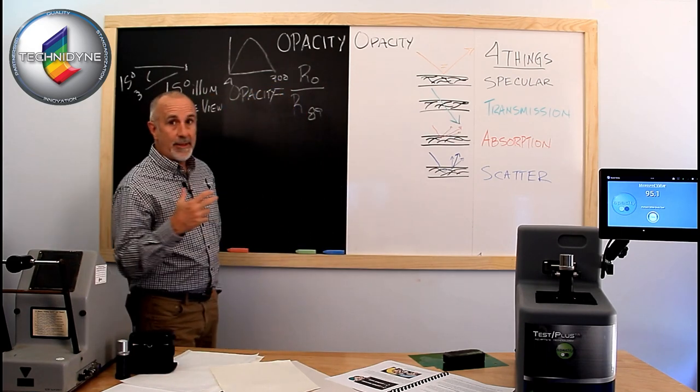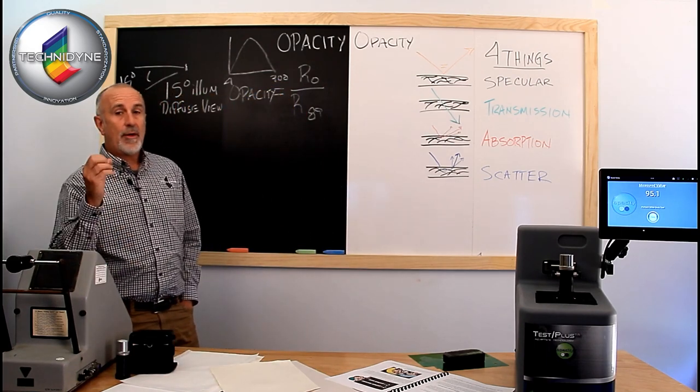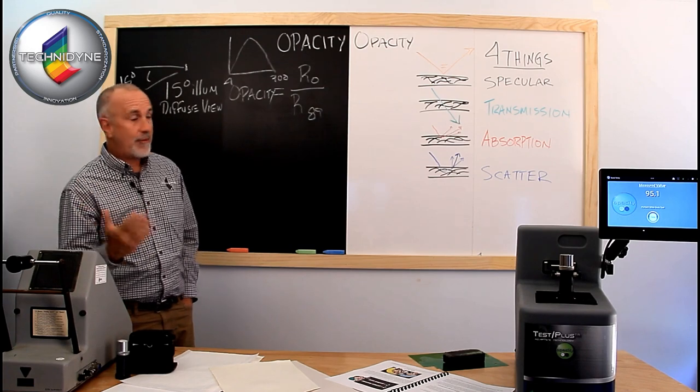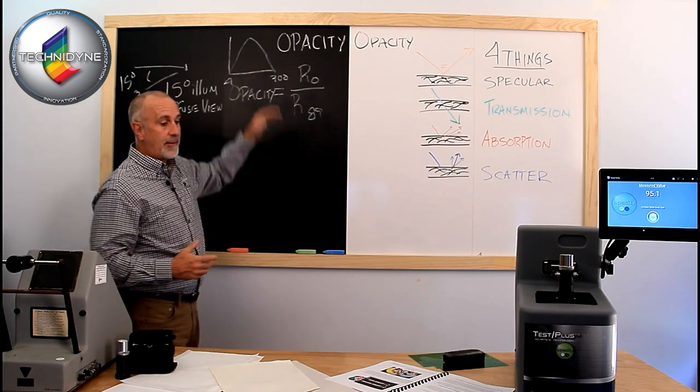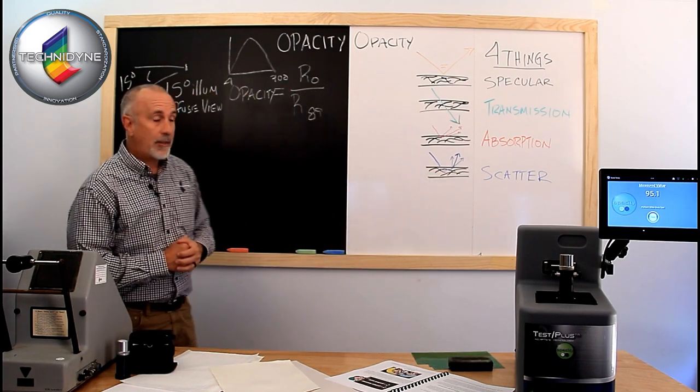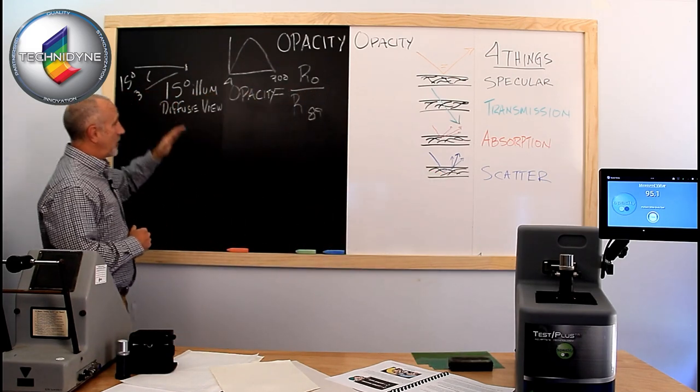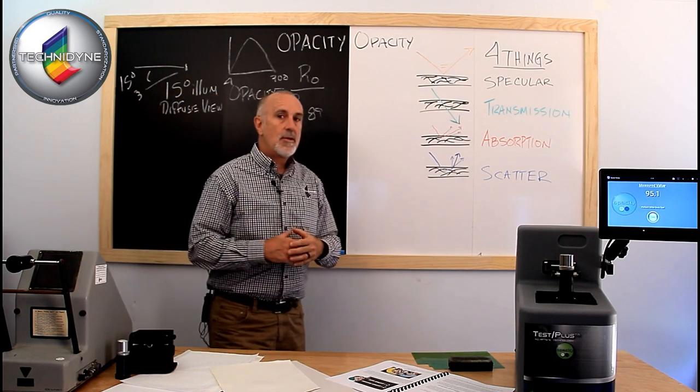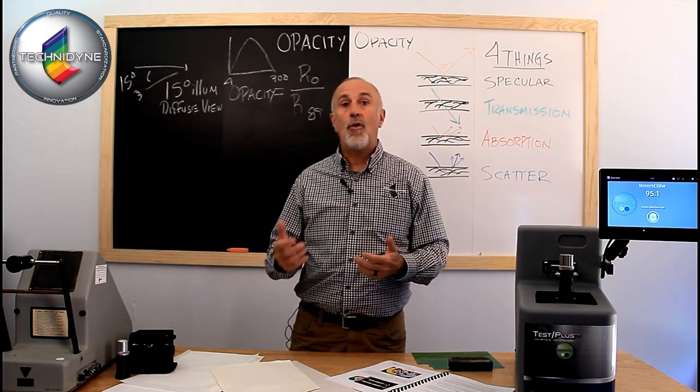So you've got that backing. We're looking at the illuminant A, the Y function, which represents 572 nanometers. So it's measuring out here in this green region of the spectrum. So it's looking at the sample through a green filter, and we already talked about the geometry. So that's basically TAPPI opacity.